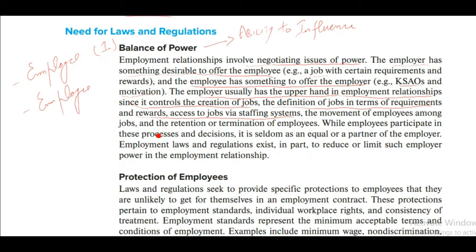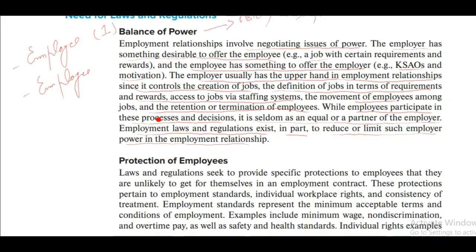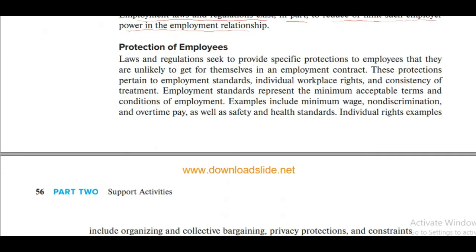The employer usually has the upper hand in employment relationships since it controls the creation of jobs, the definition of job requirements and rewards, access to jobs via the staffing system, and plans the movement of employees among jobs — such as shifts — and the retention or termination of employees. Employees participate in these processes but seldom as an equal partner. Employment laws and regulations exist in part to reduce or limit employer power in the employment relationship.